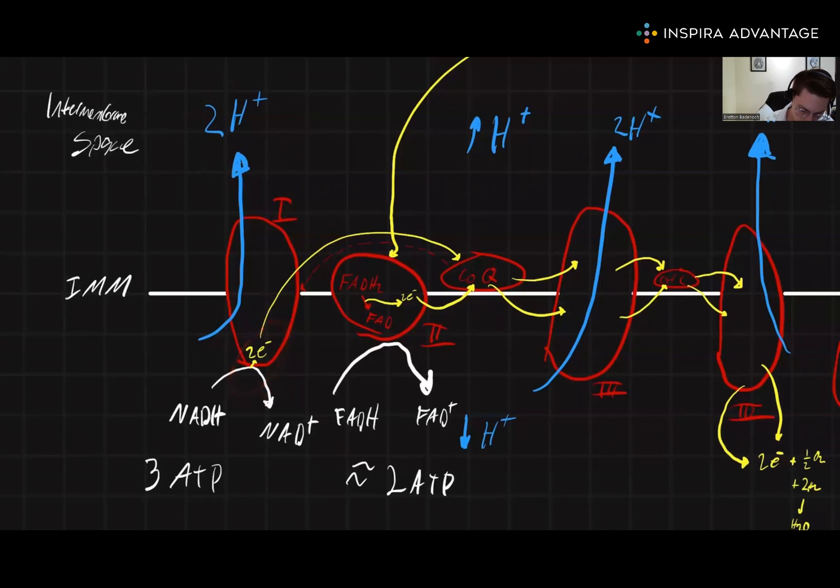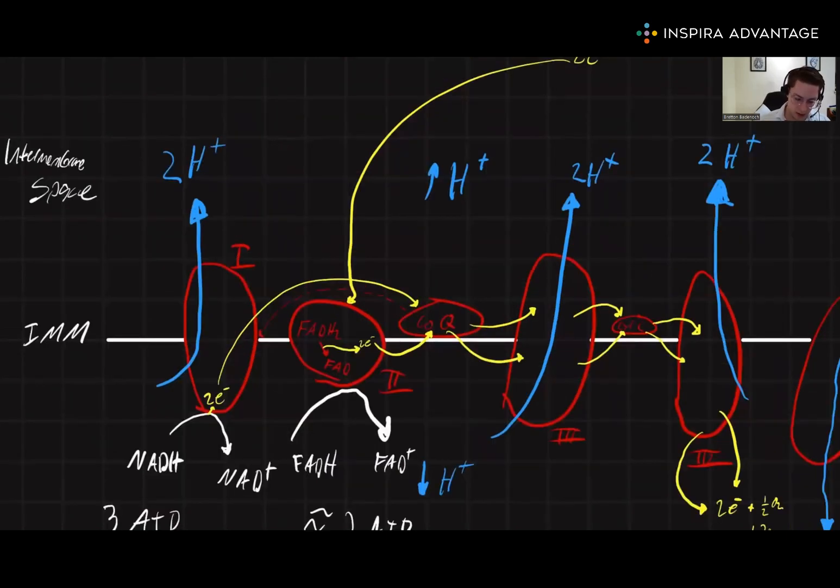These electrons are going to bypass complex 2, they do not travel into complex 2, into an enzyme called coenzyme Q. This is where electrons from complex 2 are also going to go into. So both complex 1 and complex 2 directly feed into the enzyme CoQ.